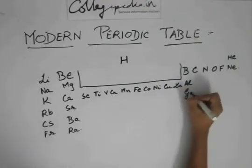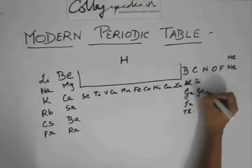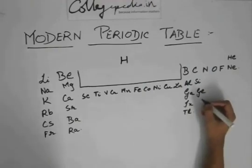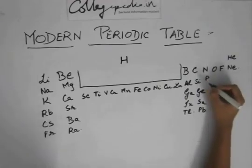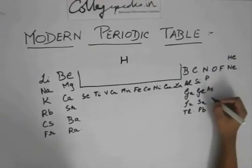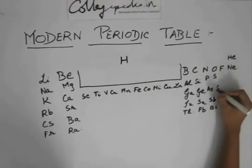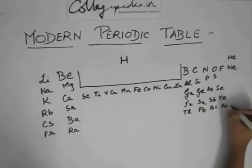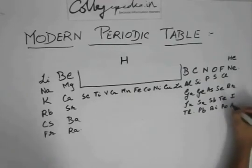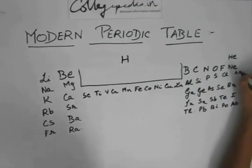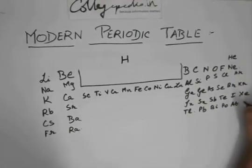Then we have boron, aluminium, gallium, indium, thallium, carbon, silicon, germanium, tin, lead, nitrogen, phosphorus, arsenic, antimony, bismuth, oxygen, sulfur, selenium, tellurium, polonium. Fluorine, chlorine, bromine, iodine, astatine, helium, neon, argon, krypton, xenon, and radon.